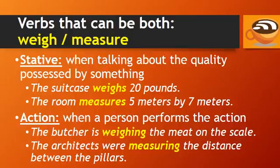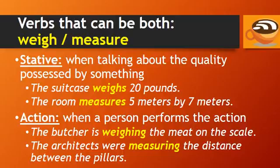Finally, 'weigh' and 'measure' are stative when talking about the quality possessed by something. For example, 'The suitcase weighs 20 pounds,' and 'The room measures 5 meters by 7 meters.' They are action verbs when a person performs the action of doing it. For example, 'The butcher is weighing the meat on the scale,' and 'The architects were measuring the distance between the pillars.'